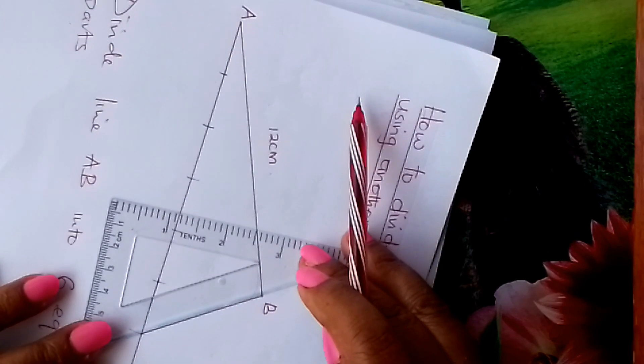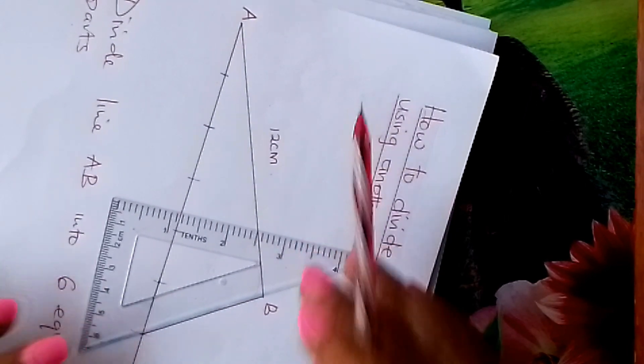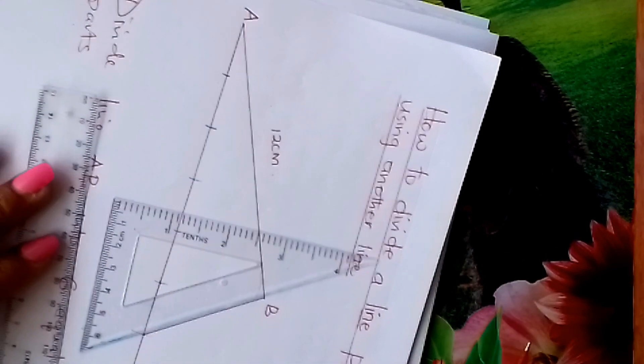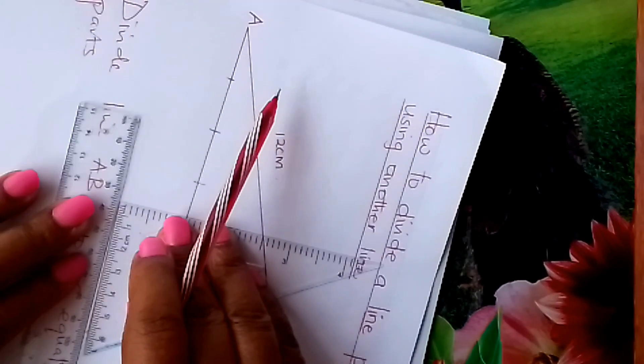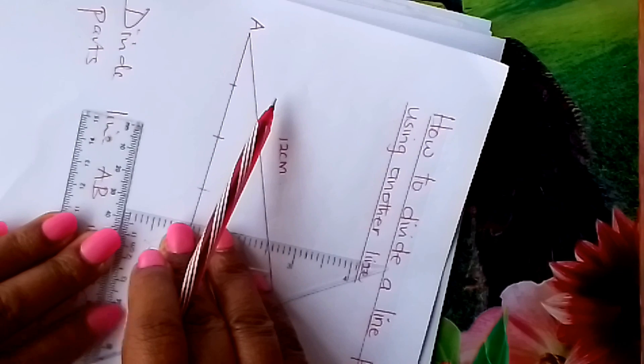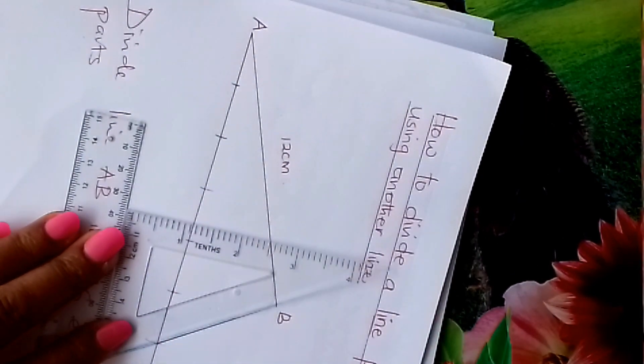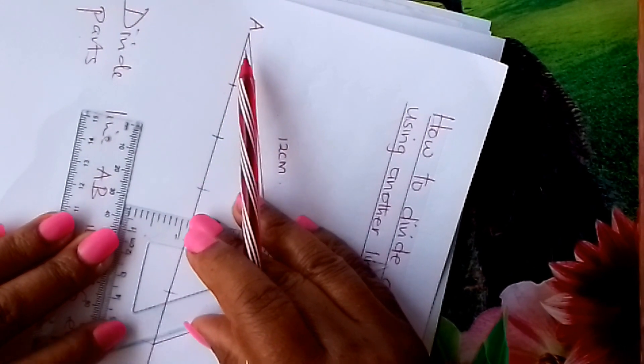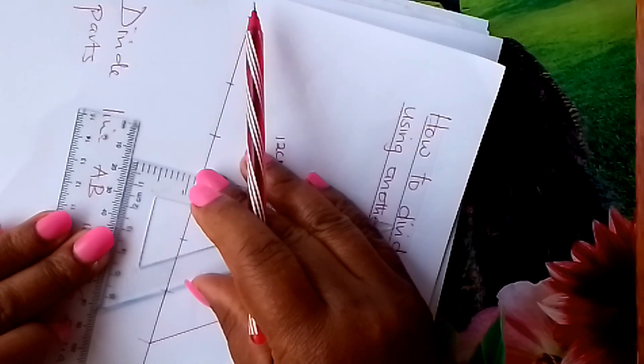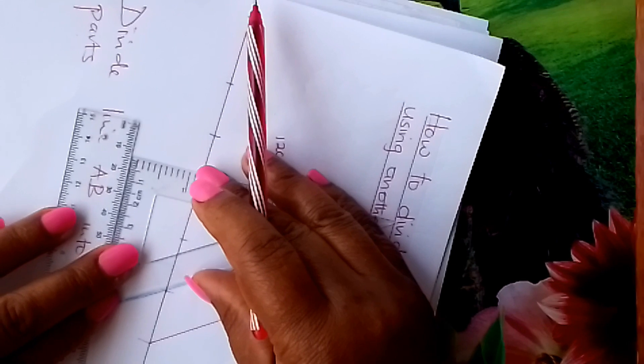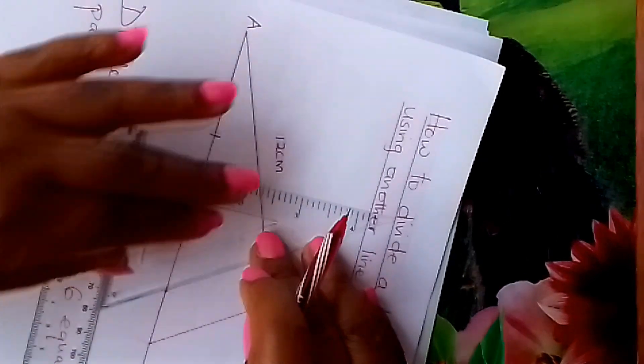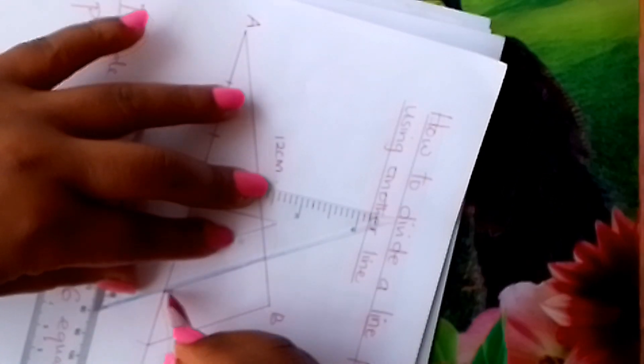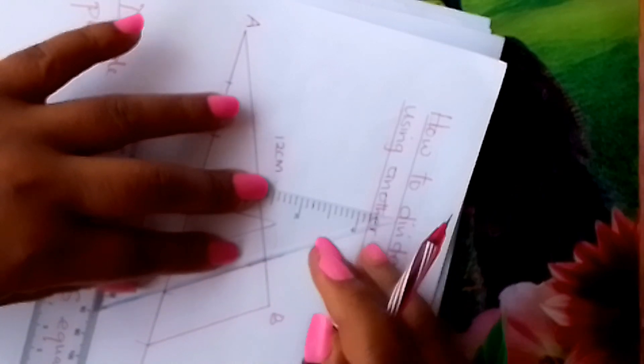Now we bring our set square here. For it to move uniformly, fix a ruler here, learner. Look at this. You fix a ruler on this end so that it holds our set square. Then you move accurately. Once you get to this arc you draw a line. There we are.